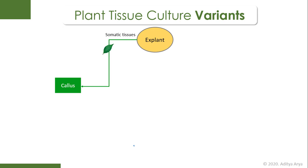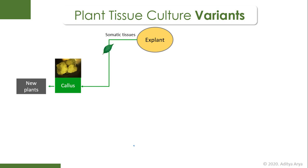Callus is a mass of undifferentiated cells which can undergo redifferentiation to form different types of tissues. When we change the media and induce this callus with different plant hormones — specifically a defined proportion of auxin and cytokinin — we can induce roots, we can induce shoots, and then eventually develop this callus into new plants.